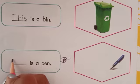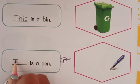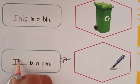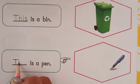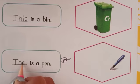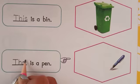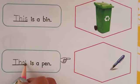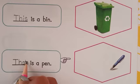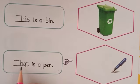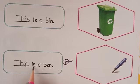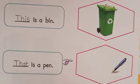So let's write capital T: sleeping line, standing line. For H: standing line, go up, make a curve and come down. For A: C curve, go up and come down in a standing line. For T: standing line, make a curve and short sleeping line. T-H-A-T, that. That is a PEN. Full stop.